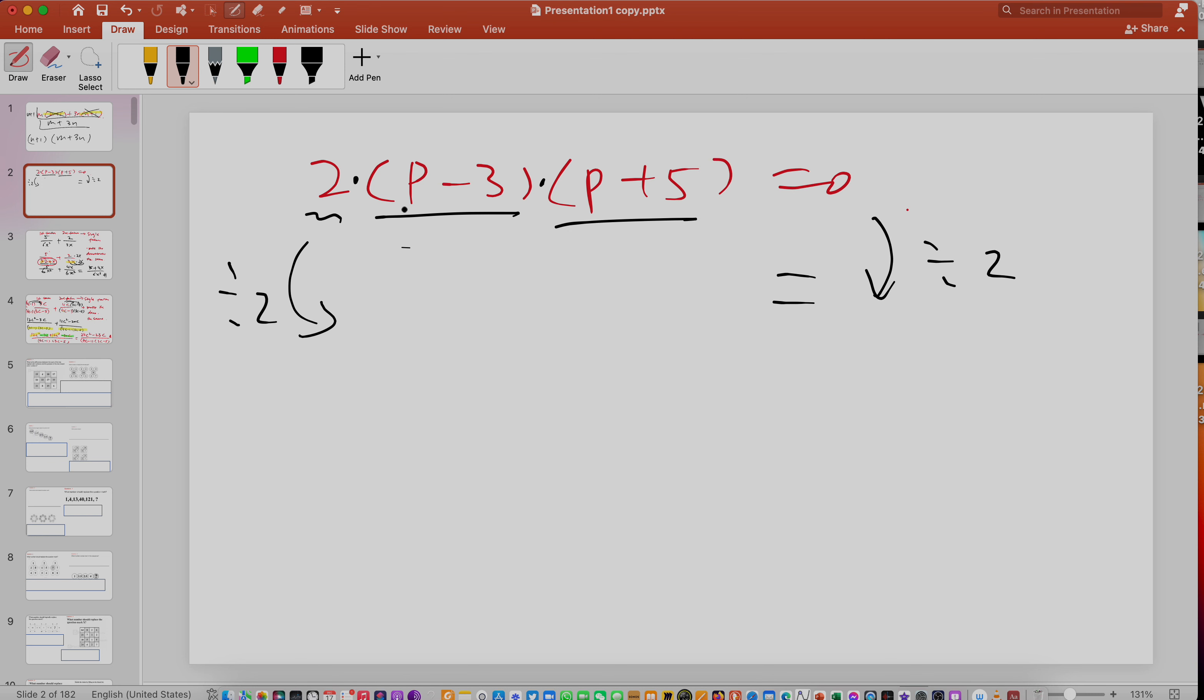So if you divide by two, must be times, that's why I say times. If you divide by two, that means the two is gone. So you're left with p minus three and p plus five. Does that make sense? And then, zero divided by two is? Zero.